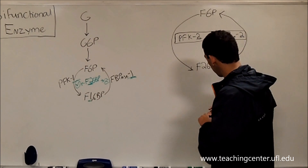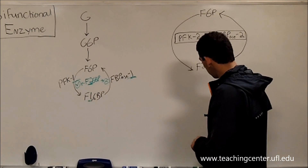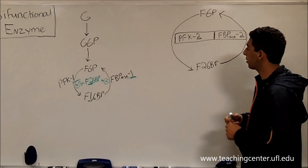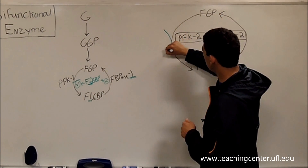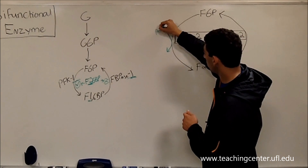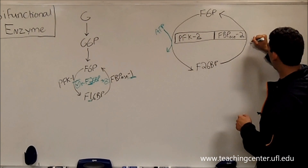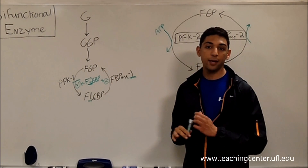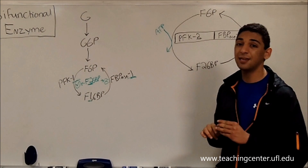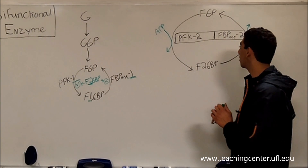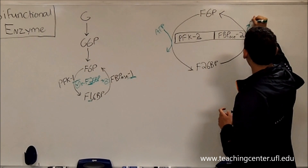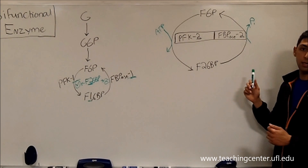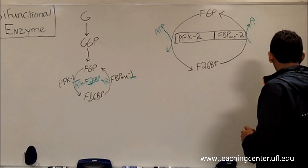Since fructose 6-phosphate has one phosphate and fructose 2,6-bisphosphate has two phosphates, this forward direction actually uses ATP. And the backwards reaction — if you guessed it makes ATP, that's incorrect. It does not make ATP. It releases an inorganic phosphate into the solution, but it does not regenerate another ATP.